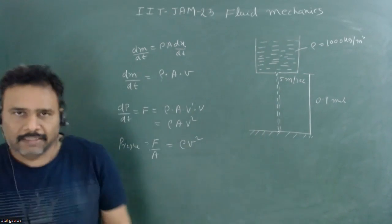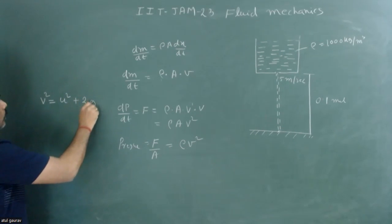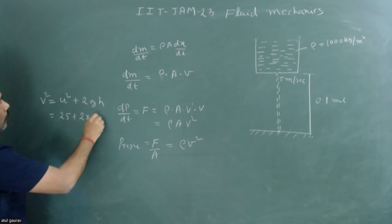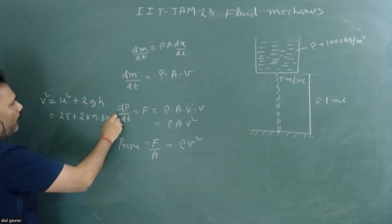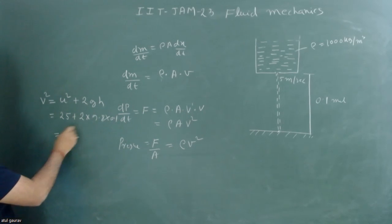We can easily use kinematics. v² = u² + 2gh. Here u is given as 5 meter per second, so that's 25 plus 2 into 9.8 into h which is 0.1. If we calculate, this will be approximately 27. So v² is 27 meter per second squared.